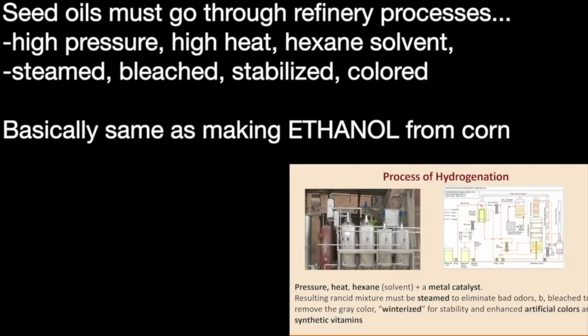This process of hydrogenation is a rather dramatic one. It involves pressure, heat, hexane as a solvent, and a metal catalyst. It has to be steamed to eliminate bad odors, then bleached to remove the gray color, winterized for stability, and enhanced with artificial colors and synthetic vitamins. It's a pretty extensive process — I've actually been inside a hydrogenation plant and it's just a huge, massive operation.